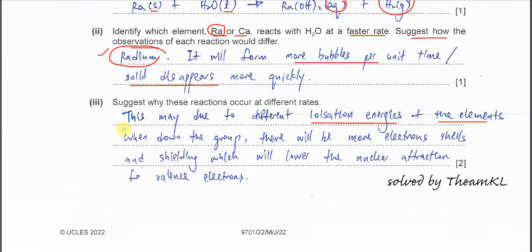Somehow the elements still release two electrons and form compounds with others. So this is what you need to explain. When down the group there will be more electron shells and therefore more shielding. When shielding is greater, it will lower the nuclear attraction to the valence electrons. Then it's easier for it to release electrons and it has a faster rate.